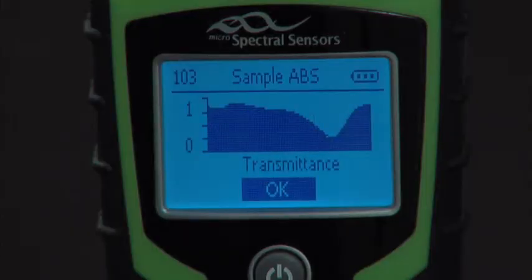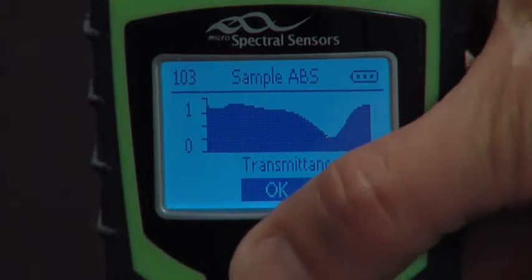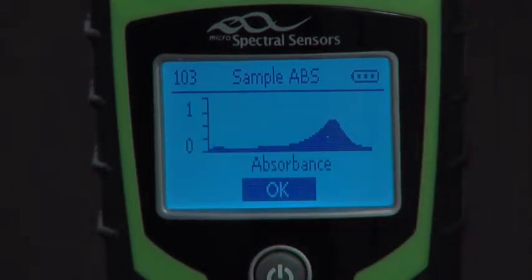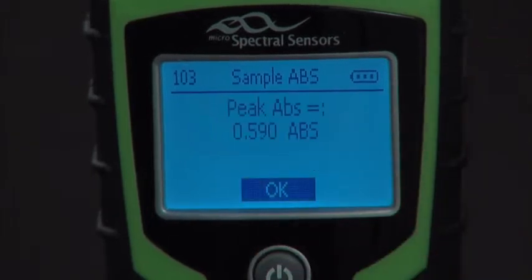The method will display a spectrum of the sample. We'll then press the center button. The method will then display an absorbance spectrum of the sample. Press the center button. We'll then report the maximum absorbance of the sample.